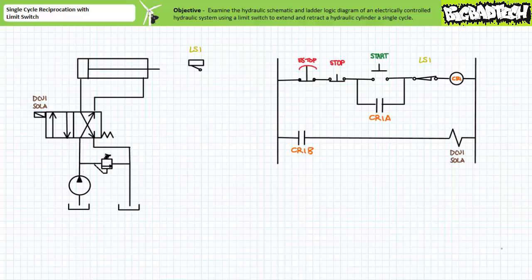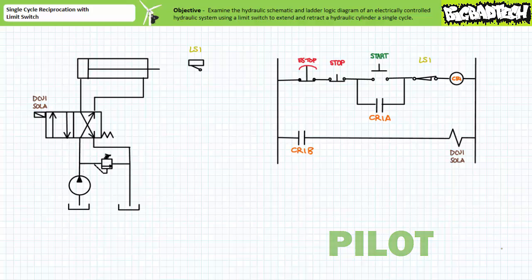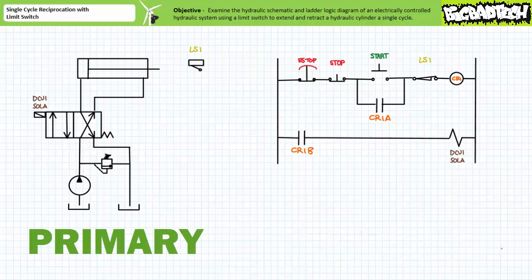The goal of this system is to use a manually activated push button to initiate the single cycle reciprocation. At the limits of travel the cylinder will automatically retract. Such a system could be used to perform some industrial tasks like punching or bending a workpiece. Note that the electrical side of the system is acting as the brains, dictating when and what happens, however the hydraulic side is acting as the brawn and it is the aspect of the system that does the actual lifting, pushing, punching, or pulling.